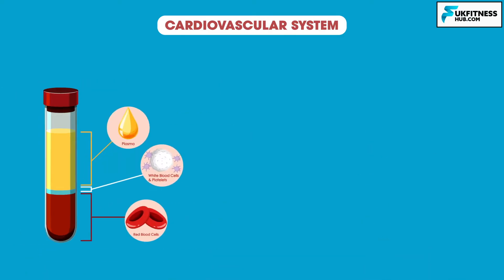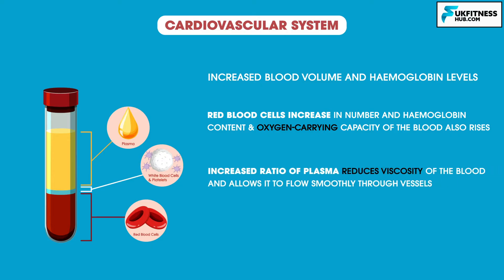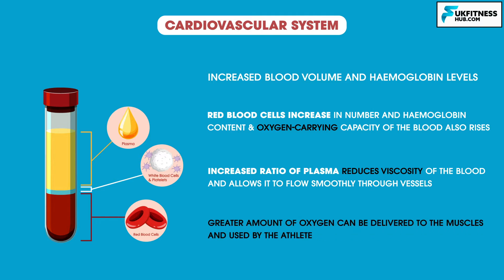Another adaptation is increased blood volume and hemoglobin levels. Red blood cells may increase in number and the hemoglobin content and the oxygen-carrying capacity of the blood may also rise. There is also an increased ratio of plasma in the blood cells, which reduces the viscosity of the blood, allowing it to flow more smoothly through the blood vessels and allowing for greater amounts of oxygen to be delivered to the muscles.